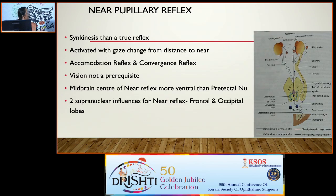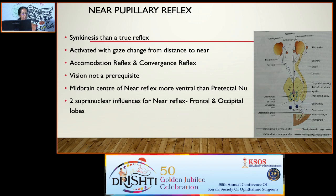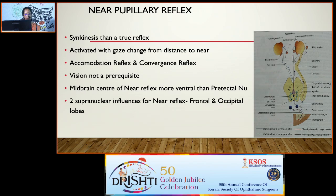From the Edinger-Westphal nucleus, fibers travel via the oculomotor nerve to the ciliary ganglion, synapse there, and continue via short ciliary nerves to the sphincter pupillae. The near reflex is actually a synkinesis rather than a true reflex; it is activated with gaze change from distance to near, including both accommodation and convergence. Visual acuity is not a prerequisite for near pupillary reflex. The midbrain center for near reflex is more ventral than the pretectal nucleus — this is the reason we get light-near dissociation.